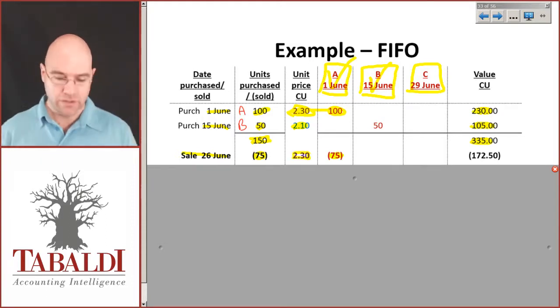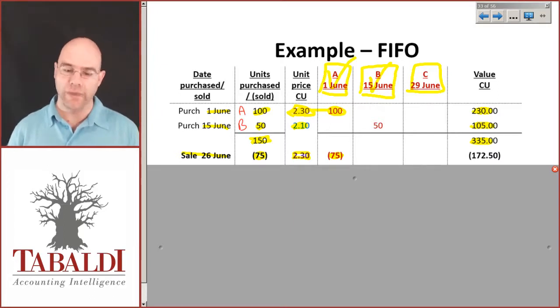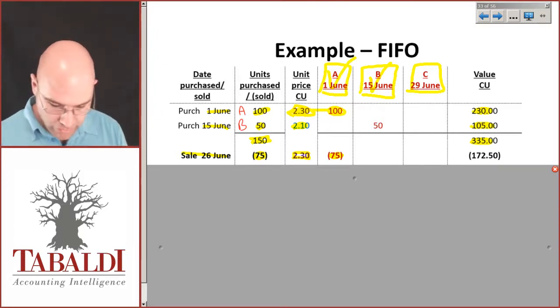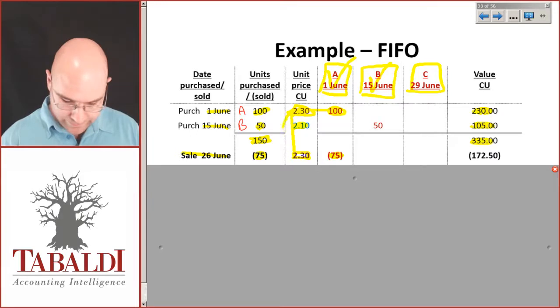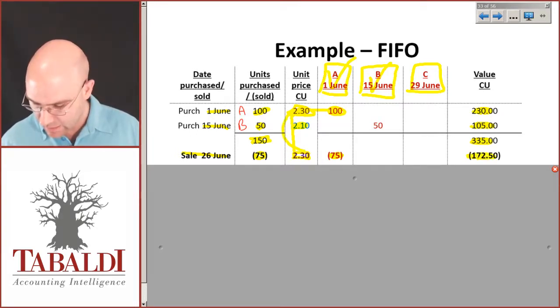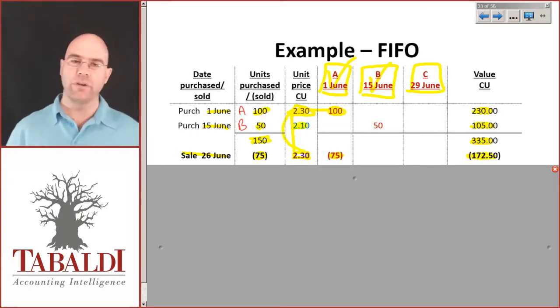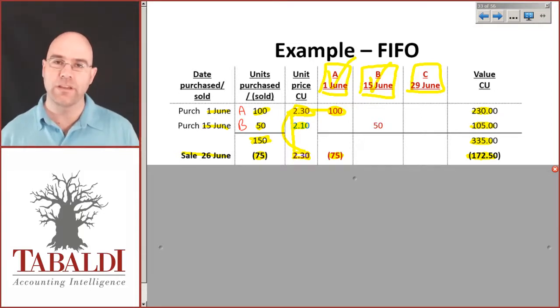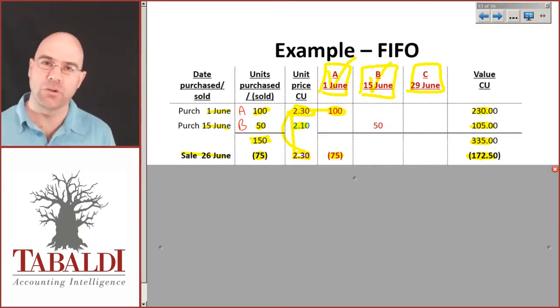That's all going to come out of the purchase from the 1st of June, column A. So I'll now take the 2.30 times 75 gives me 172.5 cost of sale. I'm going to debit the expense, credit inventory.